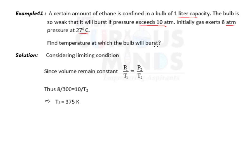So find temperature at which the bulb will burst. How do we find the temperature at which the bulb will burst? When will it burst? When the pressure exceeds 10 atm. So initial pressure is 8 atm. Basically we have to bring it from 8 atm to 10 atm. Pressure will increase, then it will burst.